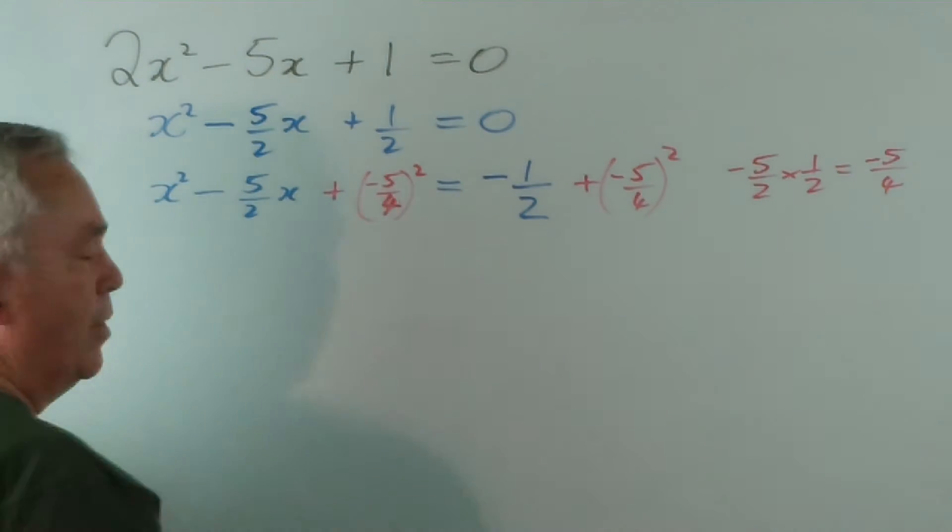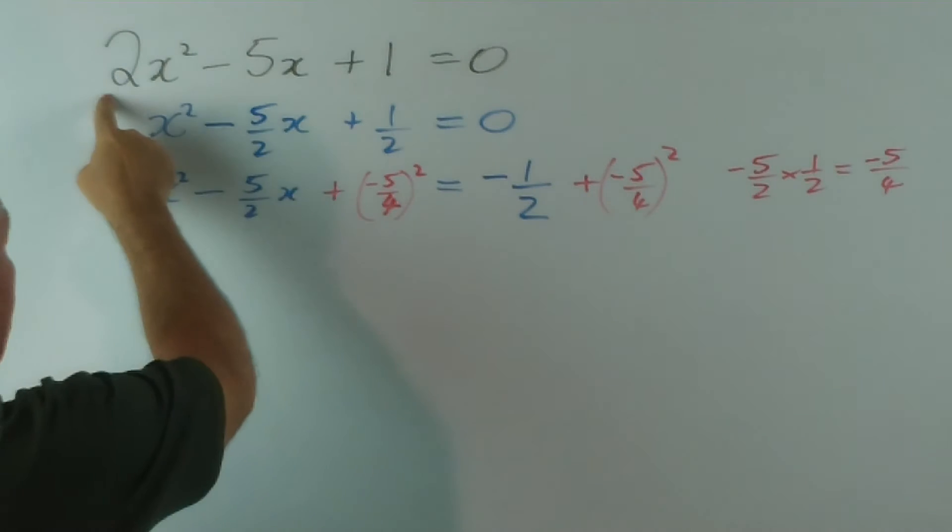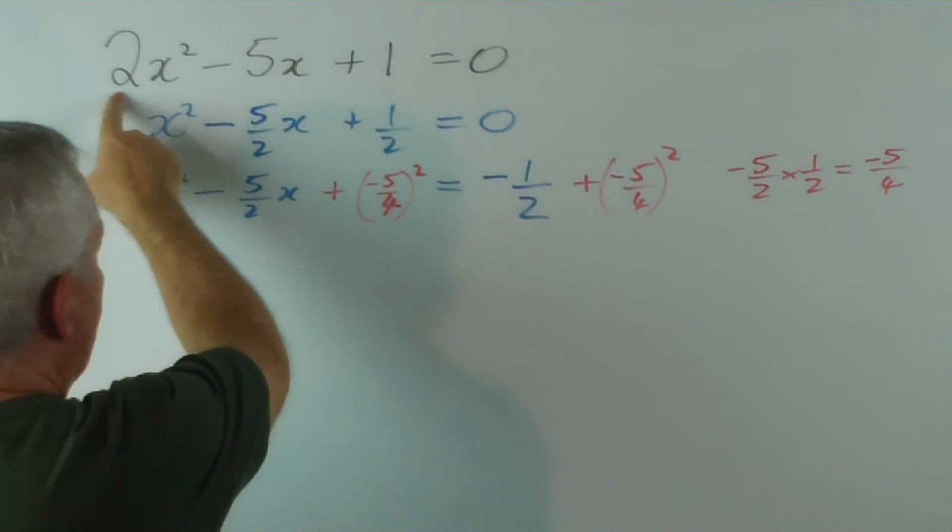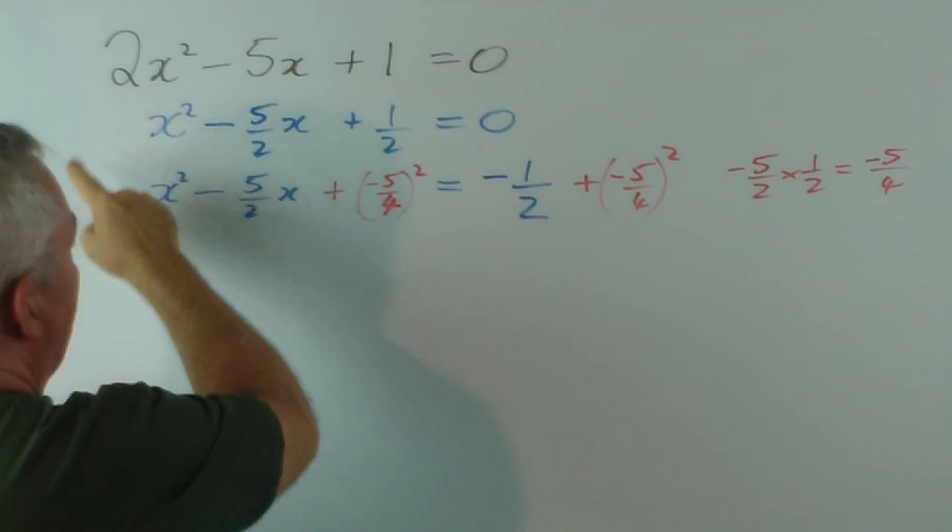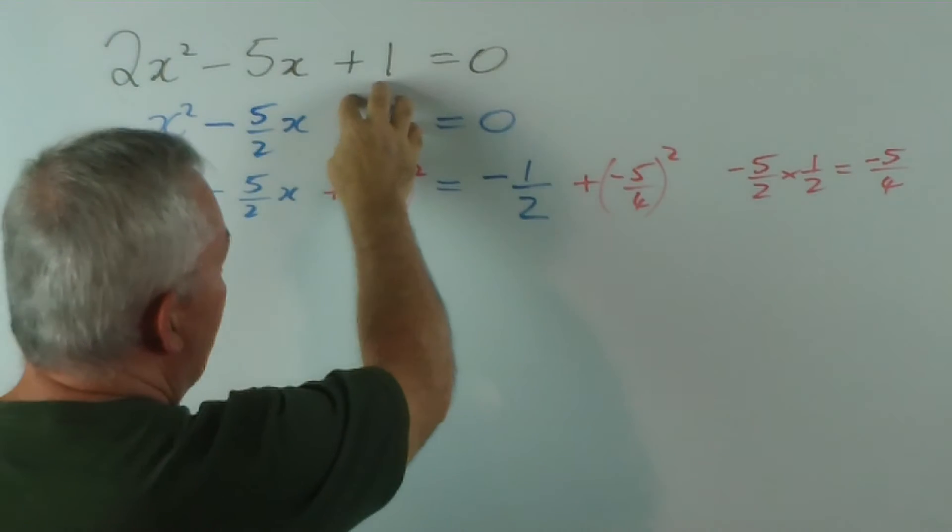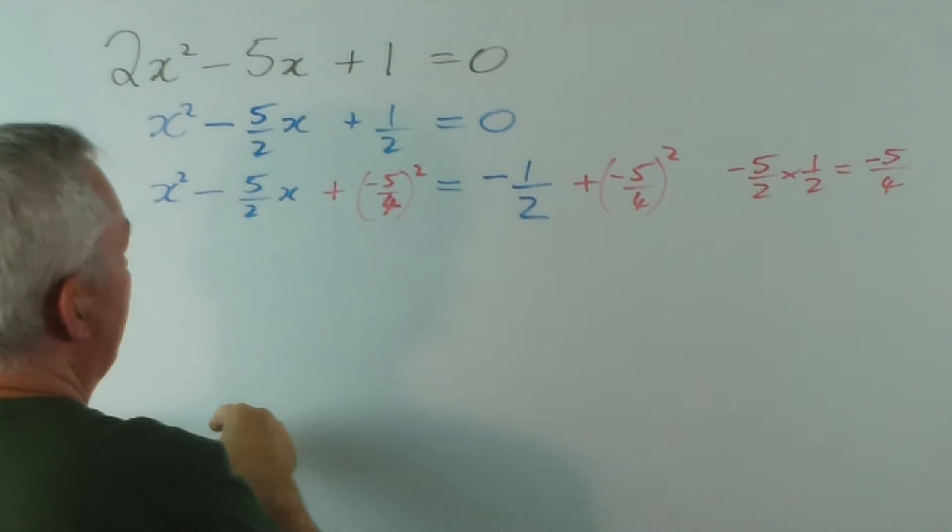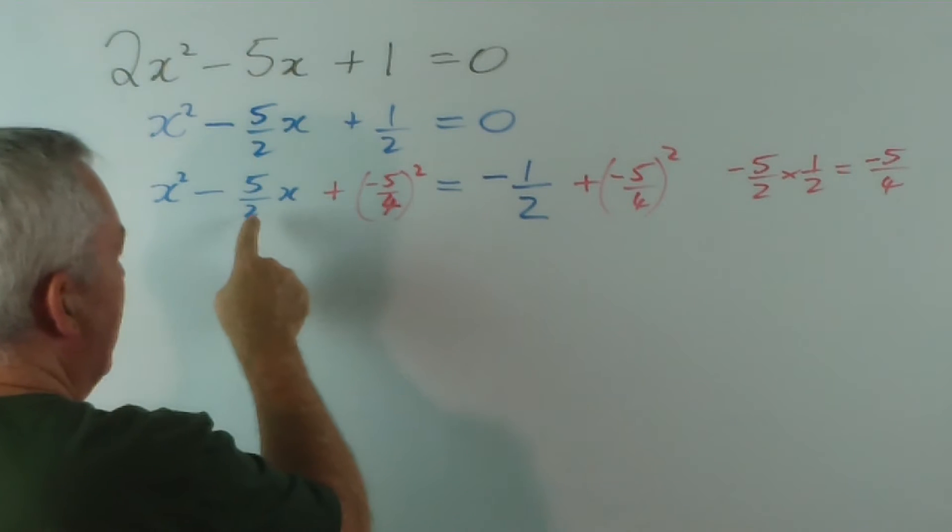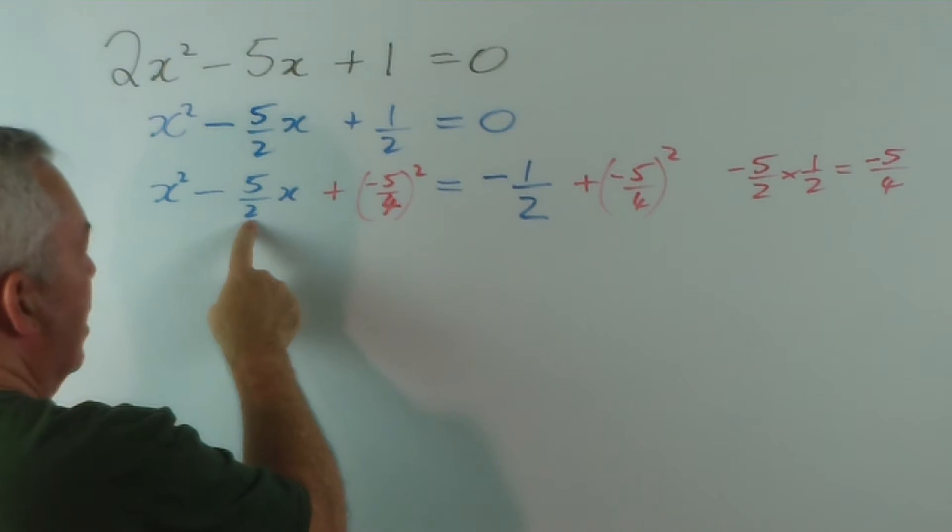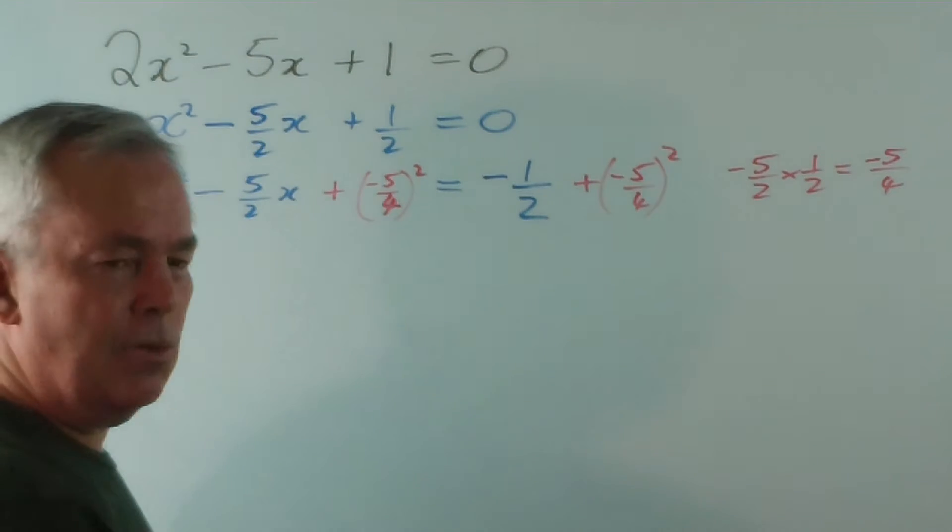So you've got that for the process. First, divide through by whatever this number is here. Once you've done that, move this to the other side. That's step number two. Step number three is complete the square by halving that and squaring it. And halving it means just doubling the number on the bottom. That's quite easy.